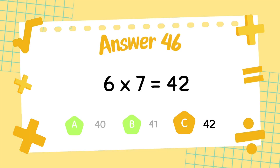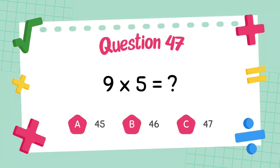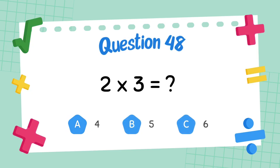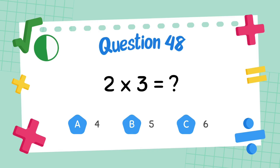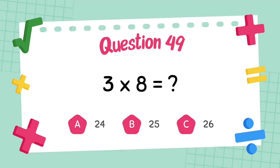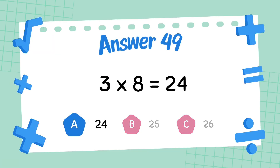The answer is 5. What is 9 multiply 5? The answer is 5. What is 9 multiply 5? The answer is 6. What is 3 multiply 8? The answer is 24.